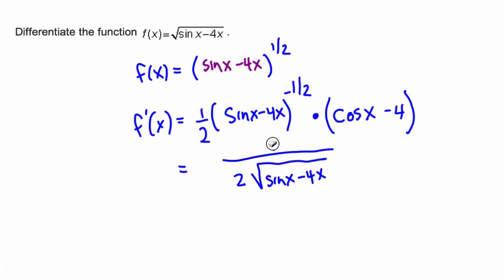And let's get rid of this 1, and we'll put a cosine x minus 4 in the numerator. And there's your derivative.